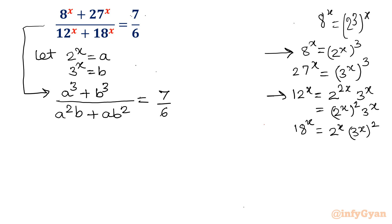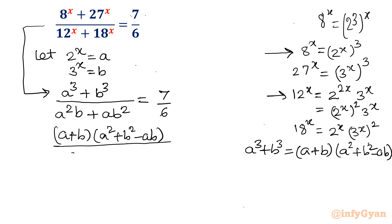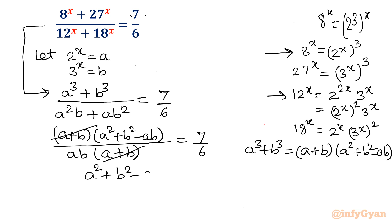Now a little simplification. We know that a cubed plus b cubed can be written as a plus b times a squared plus b squared minus ab. In the denominator, taking ab common gives ab times a plus b. So we can cancel a plus b from numerator and denominator. Now it converts to the simplest form: a squared plus b squared minus ab, over ab, equal to 7 over 6.